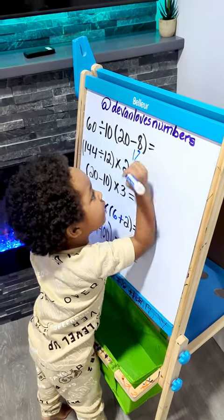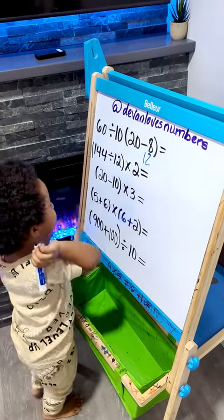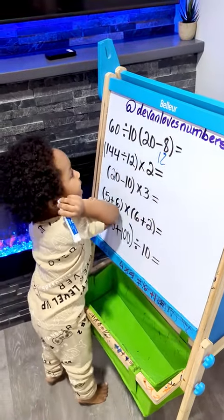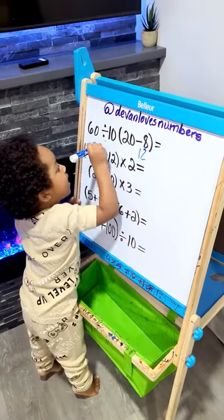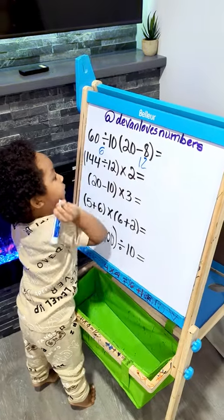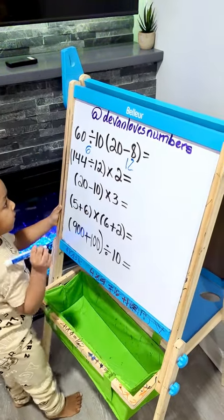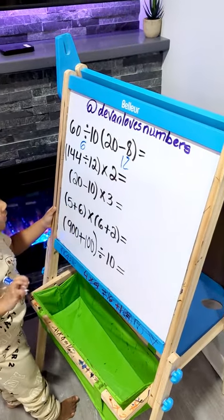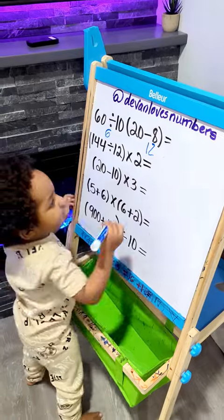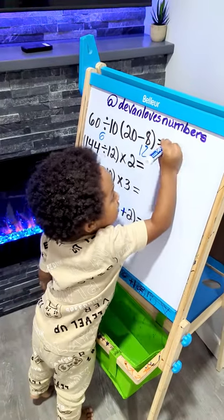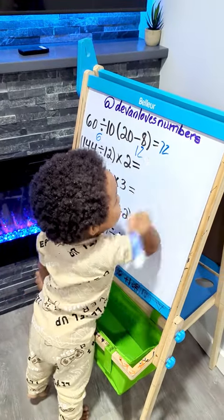14 minus 3 equals 5. 15 times 5 equals 6. 16 times 5 equals 7 and 2.